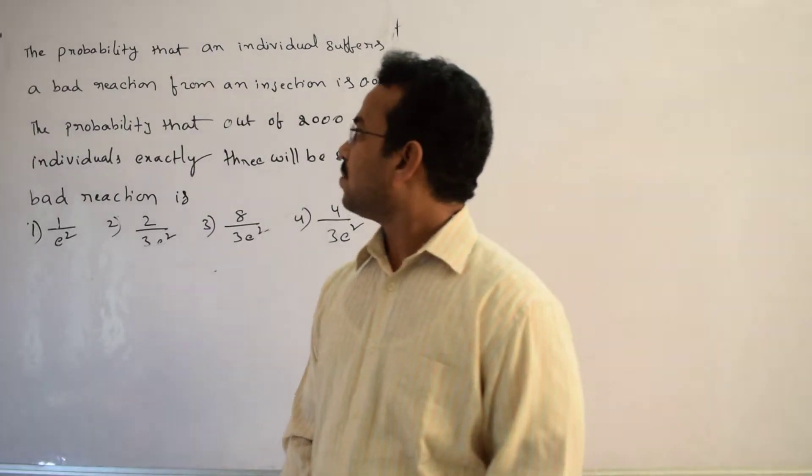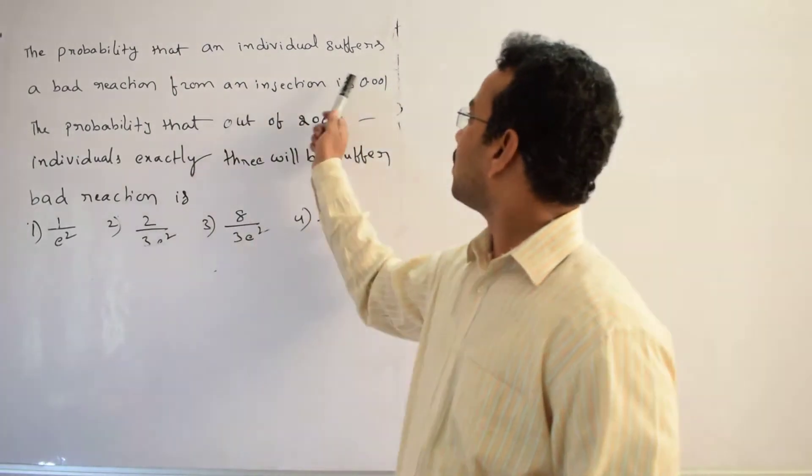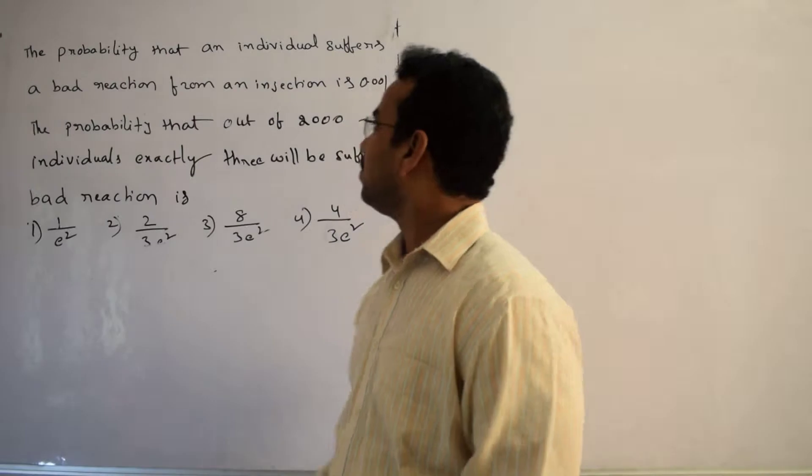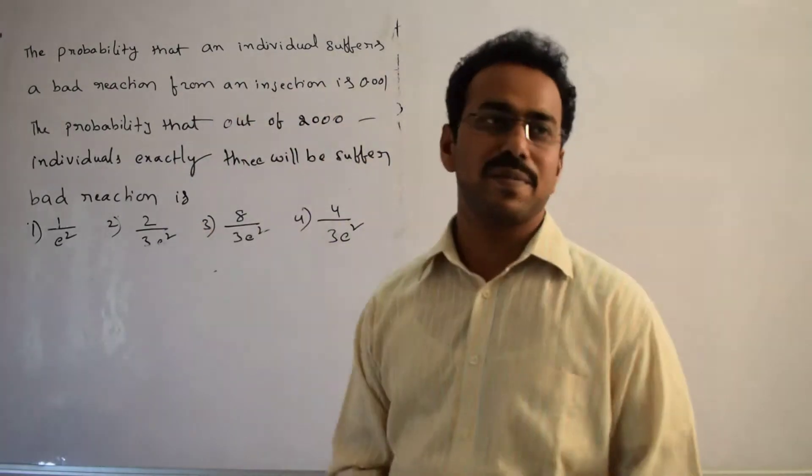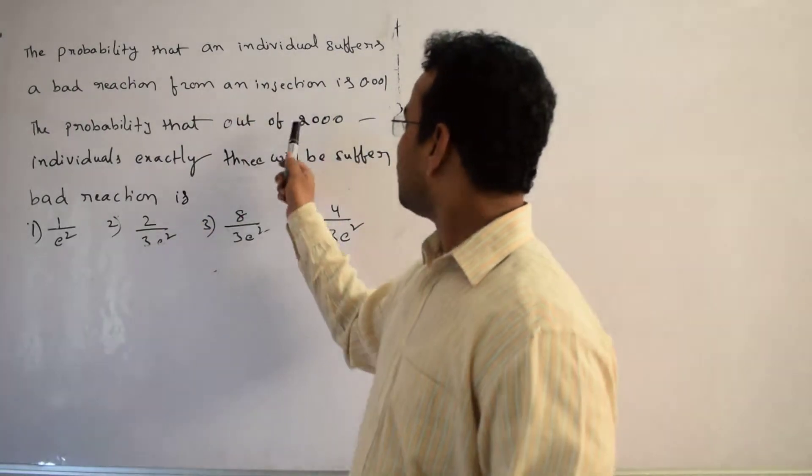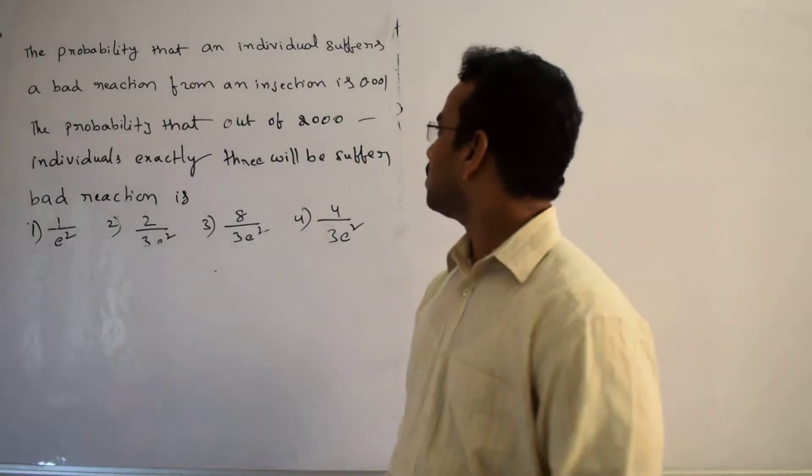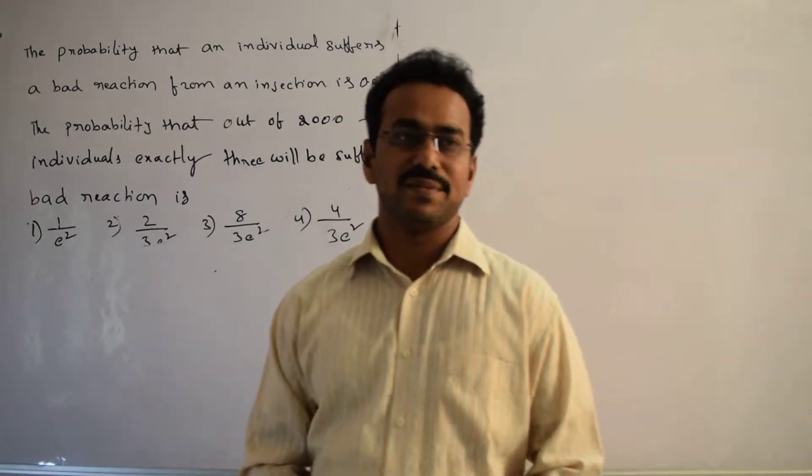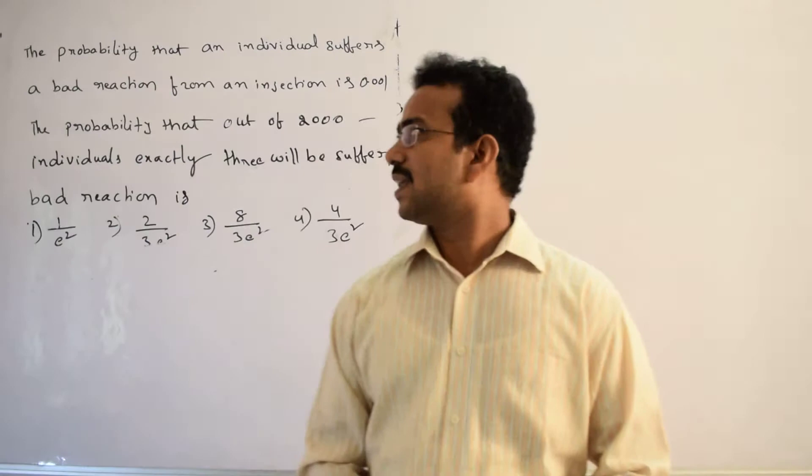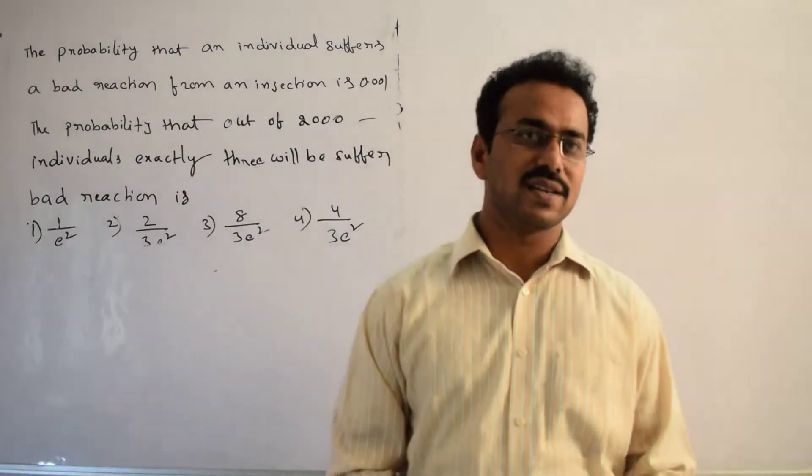Here, what is the given information? Simply, they have given a probability of 0.001, the probability an individual suffers a bad reaction. At the same time, a sample size of 2,000 is given. Clearly from the given question, we can realize that p is very small and n is large.